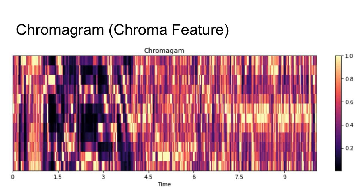Another way of visualizing audio features is a chromogram, also known as chroma features. This is based on comparison between the 12 different pitch classes — C, C#, D, D#, etc. Like a spectrogram, we're windowing over the audio and doing a short-time Fourier transform, then comparing results against each pitch class. Looking at the chart, you'd see 12 different blocks vertically — one for each pitch class — and the color shows how well the audio lines up with that pitch class.